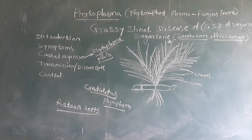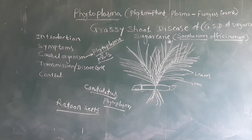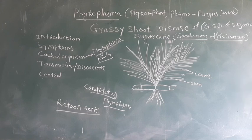The last point is control — how the disease can be controlled. The first control measure is the use of healthy cane seeds. Sugarcane is generally propagated by vegetative methods and stem cuttings are used for propagation; these stem cuttings are known as seeds. Healthy seed sets are the most important requirement for disease control. Selection of seeds from diseased areas should be avoided, and ratoon seeds should not be used for planting.